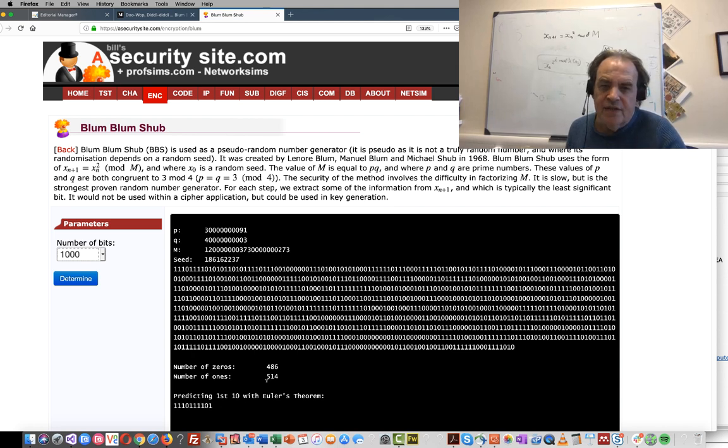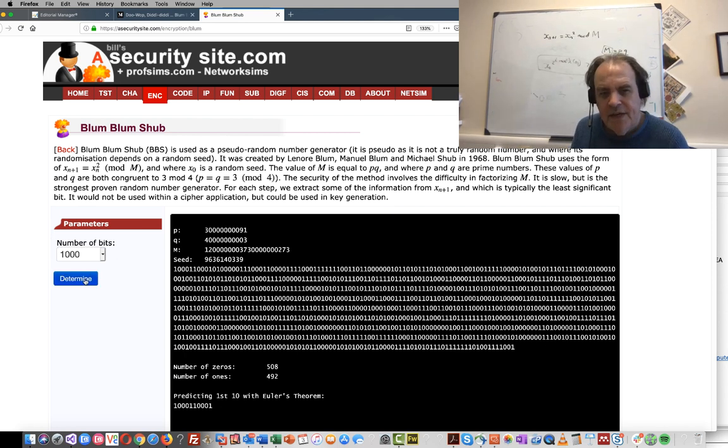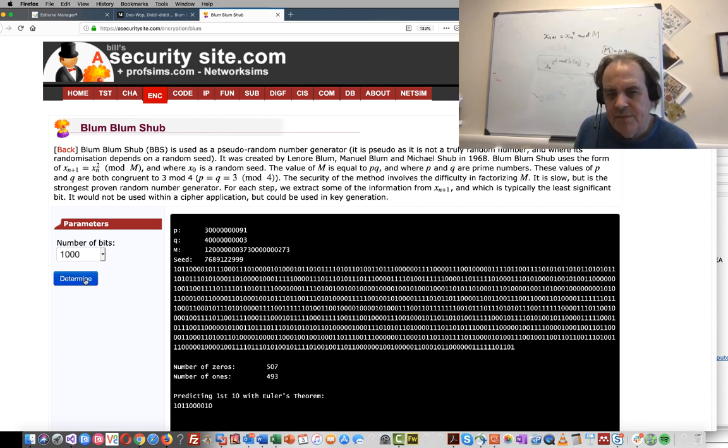In this case we're generating 514 ones and 486 zeros. If we keep generating, we should see that sometimes we generate a little bit more zeros and ones and so on. But if we had enough of these bits, we should be able to show that it is purely random. Okay, thank you.